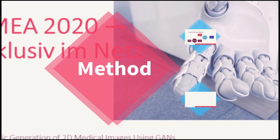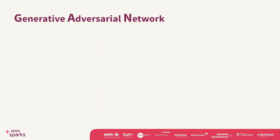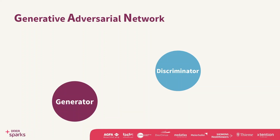So how can images be generated? I used a method called generative adversarial network, also called GAN, and it consists of multiple neural networks. The first one being the generator, and the second one the discriminator.